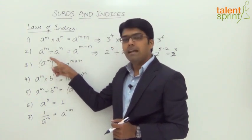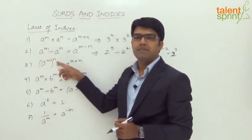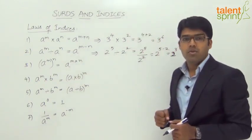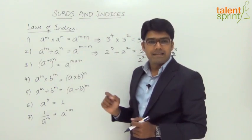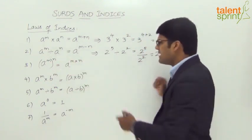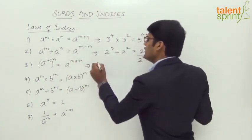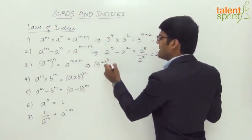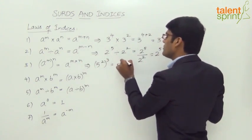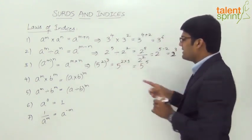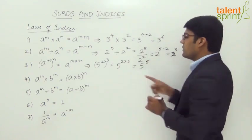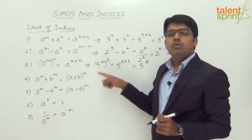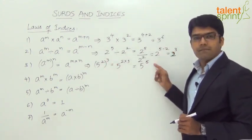The third rule: a to the power of m, whole raised to the power of n, equals a to the power of m multiplied by n. Here we multiply the two indices. For example, 5 squared, whole to the power of 3, can be written as 5 to the power of 2 times 3, which equals 5 to the power of 6. So 5 squared whole cubed equals 5 to the power of 6.